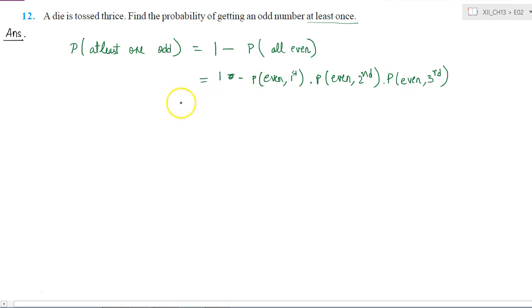And what will be here? Nothing is mentioned about the die, so I am going to assume it as a fair die. Probability of getting an even number is what? There are three even numbers 2, 4 and 6 and total six possible outcomes. So probability of getting an even number will be 3 by 6.